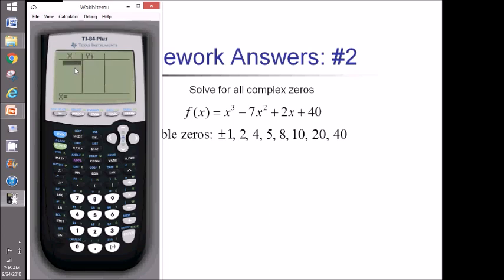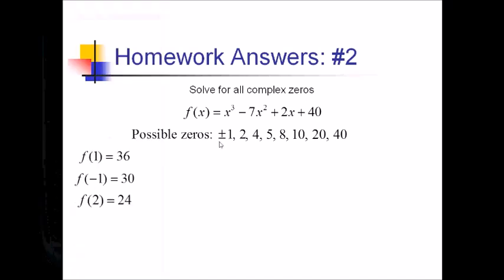I'm going to start entering some values. So, 1, that doesn't work. Negative 1 does not give me a zero. On my list now, I've also got 2 and negative 2. So, 2 doesn't work. Negative 2, that works. Alright, so we tried a bunch of things, and negative 2 was the first number that worked.